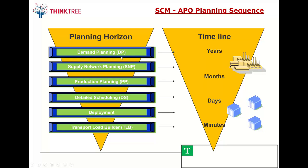Then we have APO — Advanced Planner and Optimizer — which is a supply chain management product. APO provides advanced planning and manufacturing scheduling. Within APO there are different buckets of processes and functions: Demand Planning, Supply Network Planning, Production Planning and Detail Scheduling, and Transportation Planning. These allow you to do planning from a horizon of years down to the month, the day, and even the minute — end-to-end supply chain management.